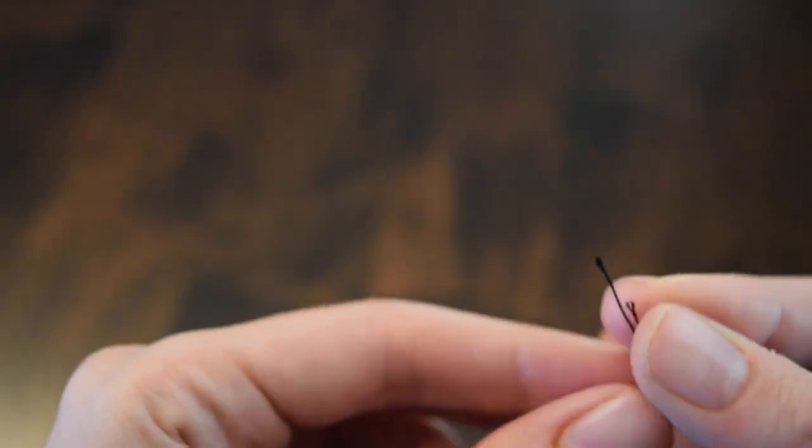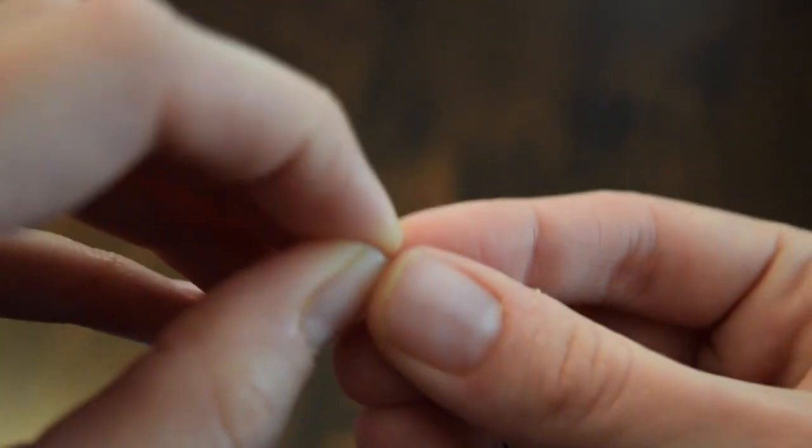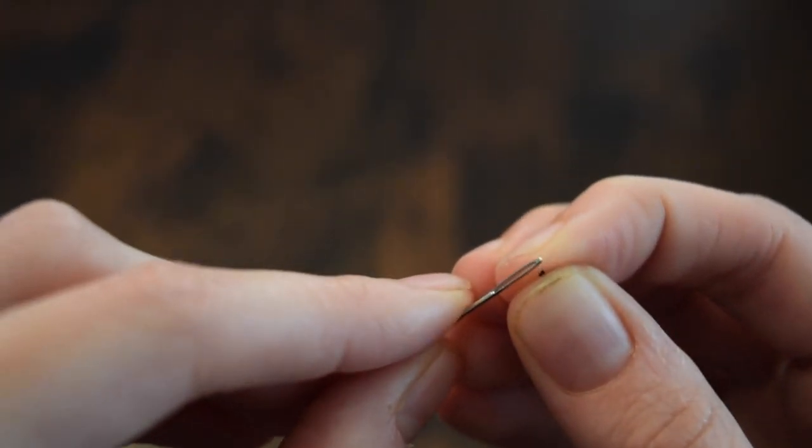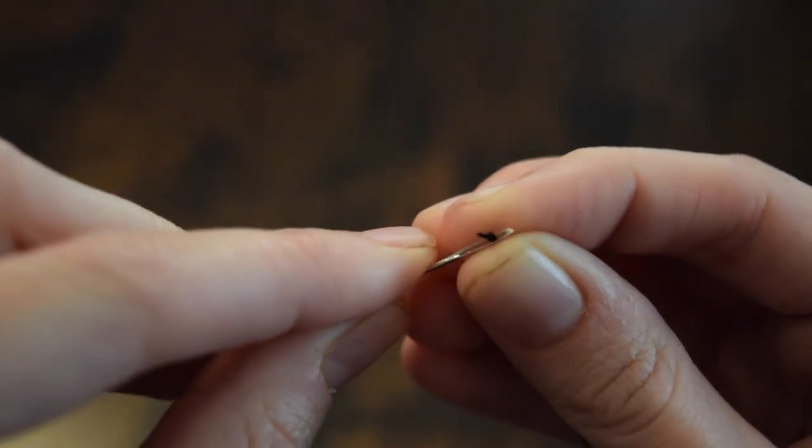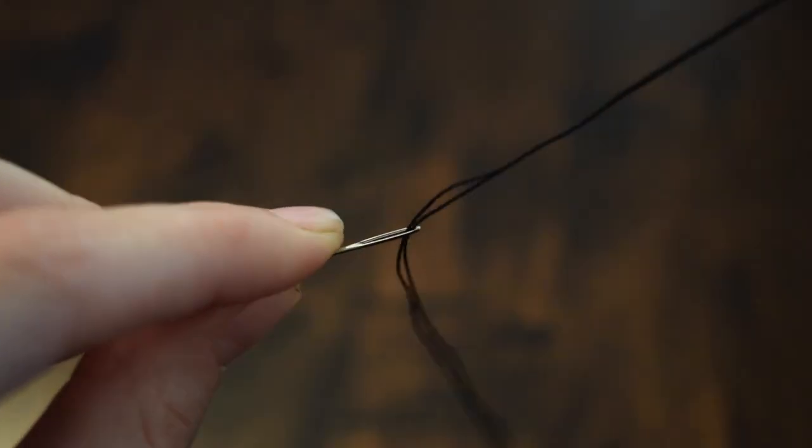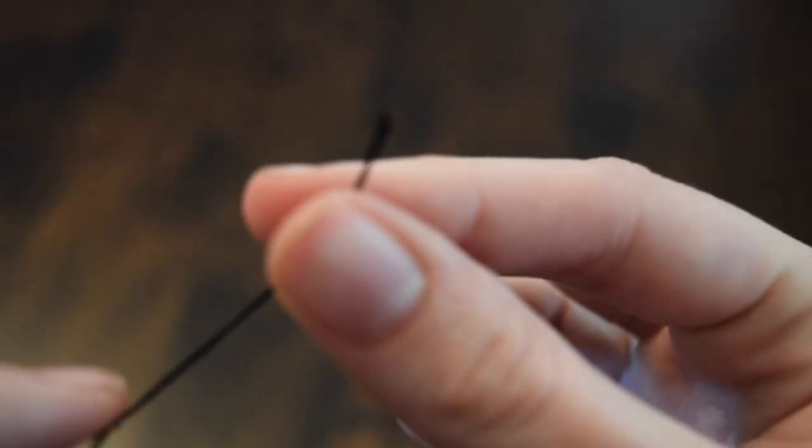Another way you can start is just to take one strand that's twice as long, match up the ends just like the first time. Grab your needle. And the same way, line it up with the eye and just push it through. Again, just pull it a couple of inches. You don't need a huge tail.